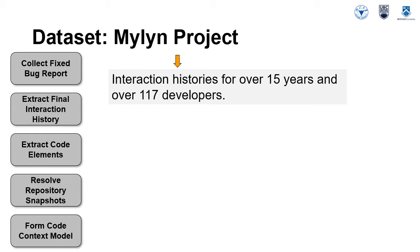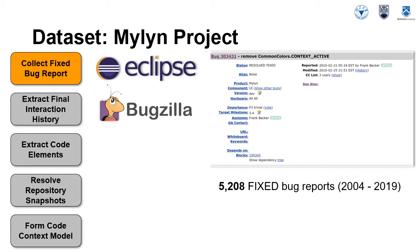To experiment with the proactive formation of code context models, we need a dataset of such models. We form such a dataset using interaction histories captured as developers work with the Eclipse Myelin open source project. We chose Myelin because the project has collected interaction histories for over 15 years, representing work of over 117 developers. For the development of the Myelin project, interaction histories are stored with the tasks recorded in the Eclipse Bugzilla system.